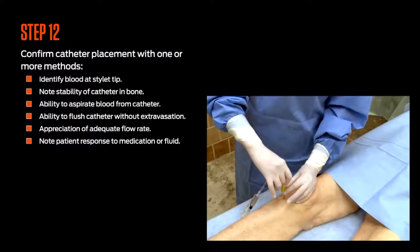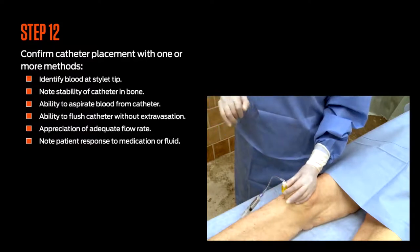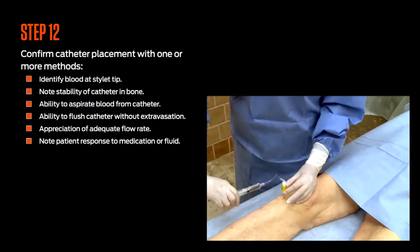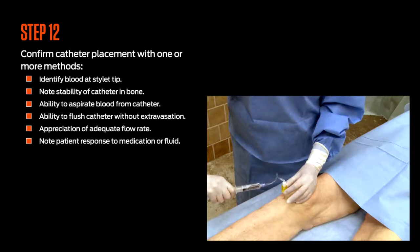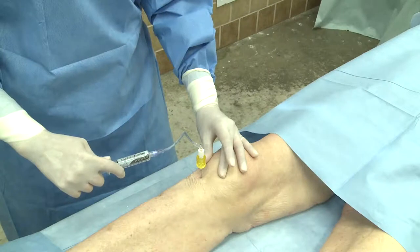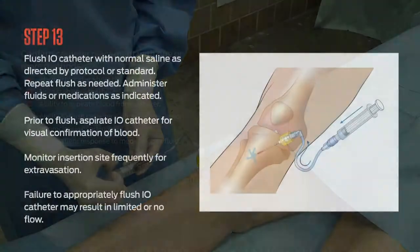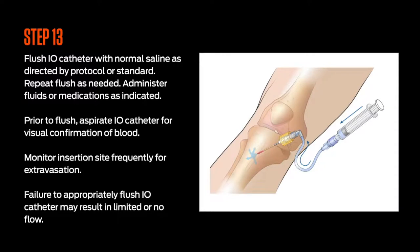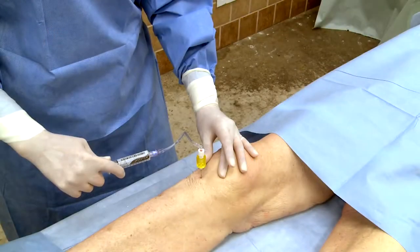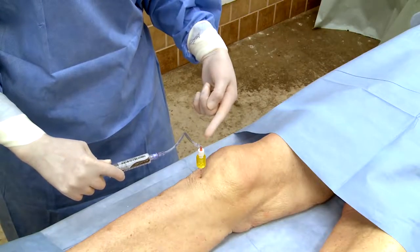Step 12: Confirmation of catheter placement should include one or more recommended methods — identify blood at the stylet tip, note stability of catheter in the bone, ability to aspirate blood from the catheter, ability to flush catheter without extravasation, appreciation of adequate flow rate, and noted patient response to medications or fluids. Step 13: Flush the SAM.IO with normal saline as directed by protocol or standard. Repeat flush as needed, as failure to appropriately flush the catheter may result in limited or no flow. Once flushed, administer fluids and medications as indicated.